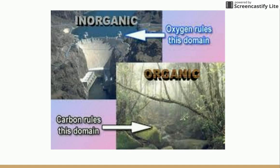When we talk about inorganic, we're talking about an area where oxygen rules the domain — oxygen is the main player. When we talk about organic, we're talking about carbon. Anytime you see the word organic, you can think of carbon. Organic means anything that is living or was once living, and that means it will possess carbon. Inorganic refers to things where carbon is not present, like cement or rocks.